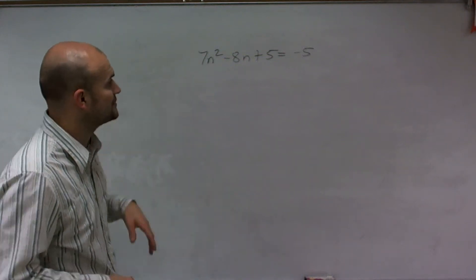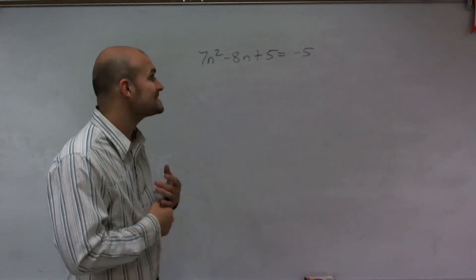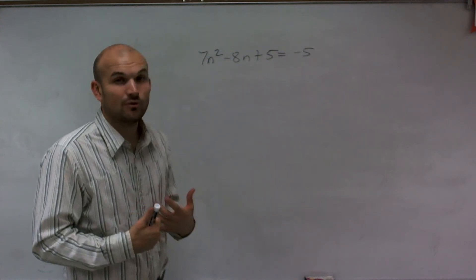Welcome. What I want to do is show you how to find the discriminant of a quadratic equation when you have 7n squared minus 8n plus 5 equals negative 5.